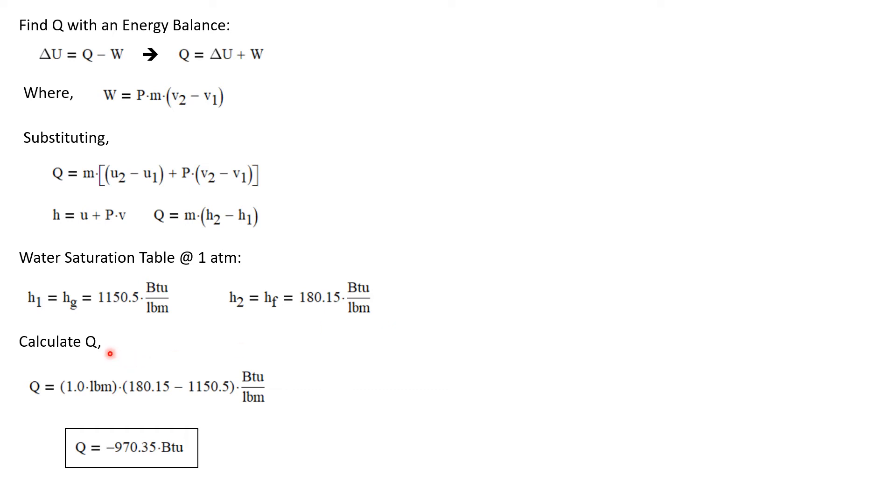Let's calculate Q from this expression. It's the mass times the change in specific enthalpy. So we have Q is one pound mass times H2 minus H1, the values we just pulled out of the table. And we get that the heat transfer that takes place during this process is minus 970.35 BTUs.